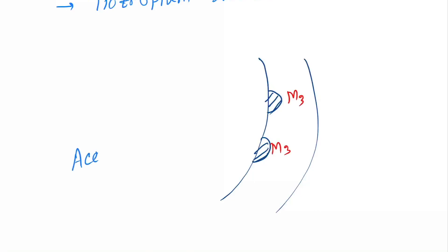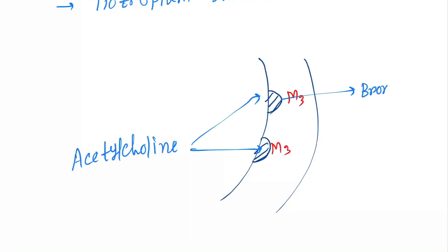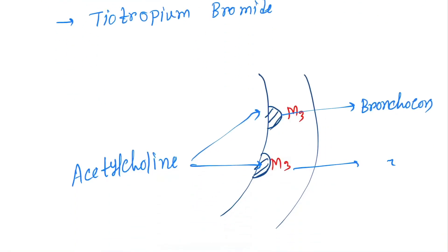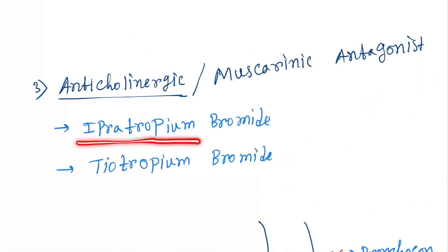Normally, acetylcholine acts on these receptors and causes bronchoconstriction. Anticholinergic drugs are also called muscarinic antagonists. These drugs come and bind to the M3 receptor, so acetylcholine is no longer able to bind and bronchoconstriction will not happen. Drugs under this class are ipratropium bromide and tiotropium bromide.